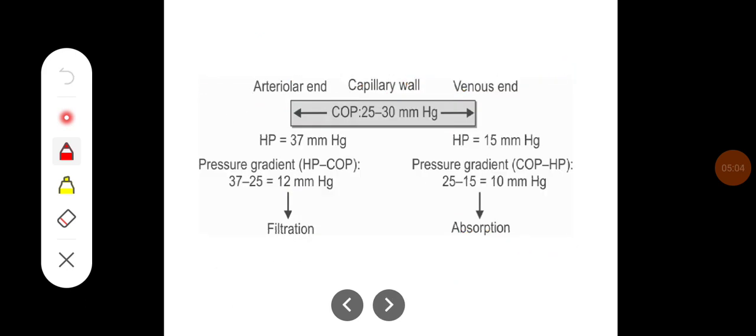These are the factors which are affecting the Starling forces. They are going to differ at the arteriolar end compared to the venular end. The hydrostatic pressure at the arteriolar end is 37 mm of Hg and the osmotic pressure is constant at around 25 mm of Hg.